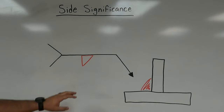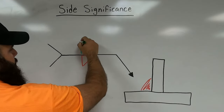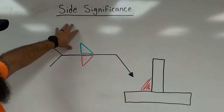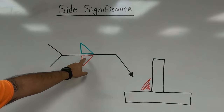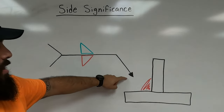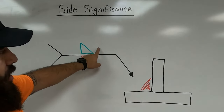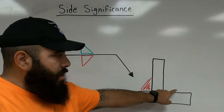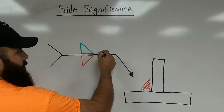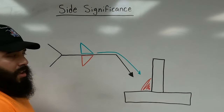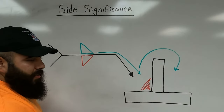What if we have a fillet weld symbol on the other side — on top of the reference line? We follow the same principle: follow the reference line down to see which side of the joint is being pointed to. But because the symbol is on other side, we skip over to the opposite side of the joint that the reference line points to, and deposit the fillet weld there.